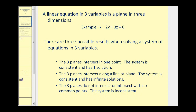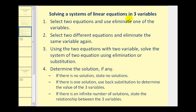This algebraic method is very similar to the elimination method for two equations and two variables — it just takes a lot more work. Here's what we'll do: first, select two equations and use the elimination method to eliminate one variable. Then select two different equations and eliminate the same variable again. Then take the two resulting equations with two variables and solve that system using elimination or substitution.